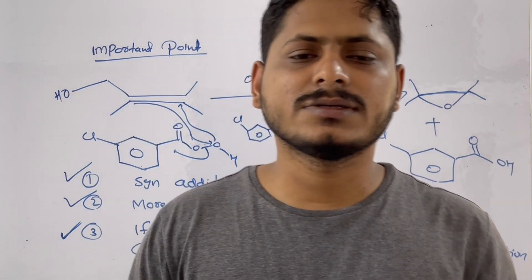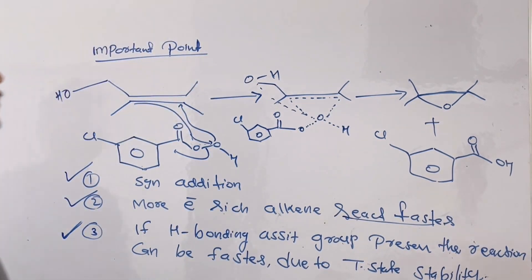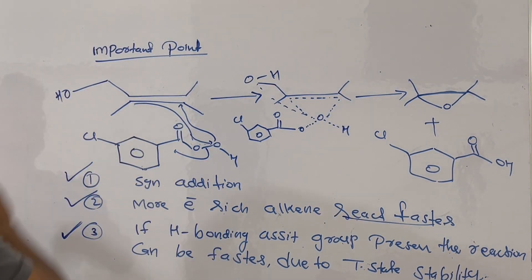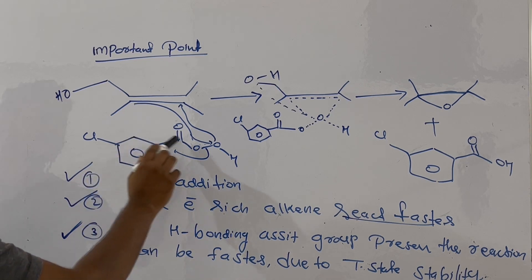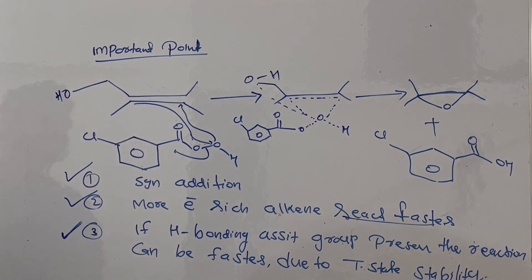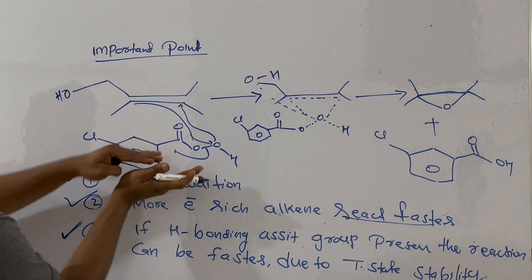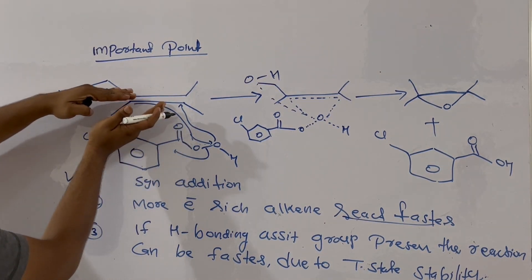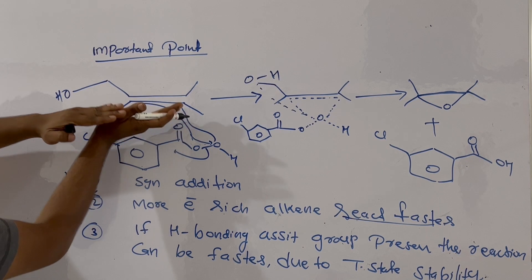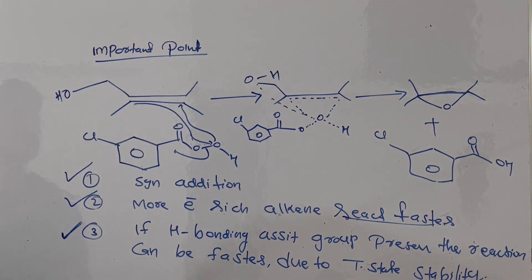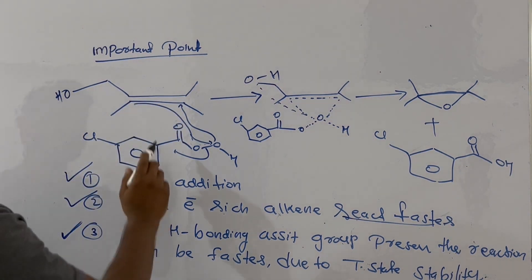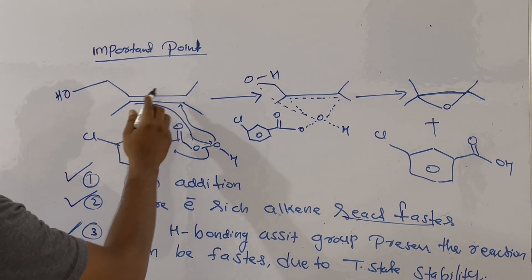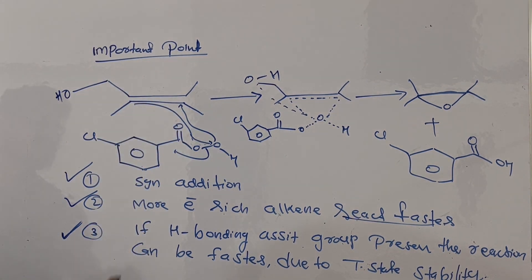Now let us discuss some important points regarding the epoxidation reaction. First, epoxidation is a syn addition reaction — mCPBA attacks on the alkene from the same side, so it is a syn addition. Second, alkene acts as an electron-rich species, that is a nucleophilic center. So if you have a more electron-rich alkene, the reaction will be faster.